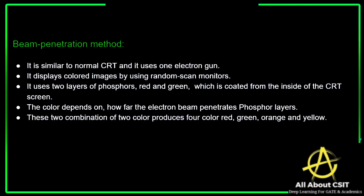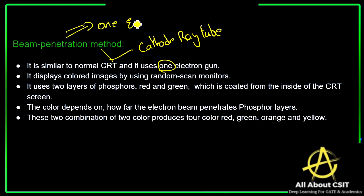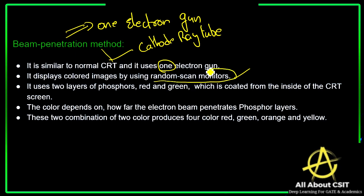The beam penetration method is similar to the normal CRT. It uses only one electron gun — remember, beam penetration uses only one electron gun. It displays colored images by using the random scan monitor.